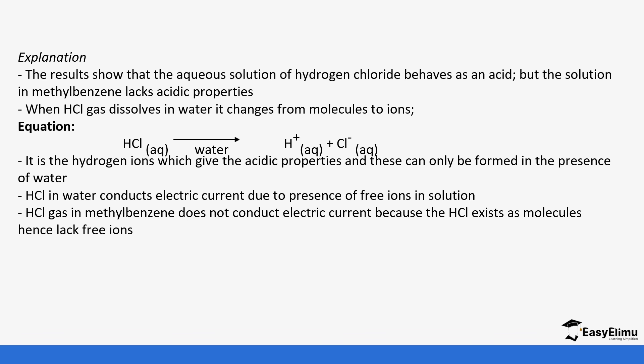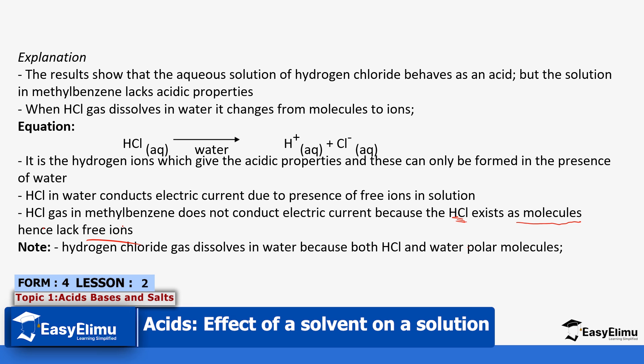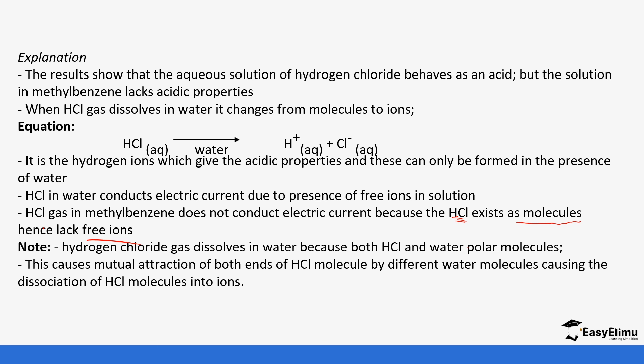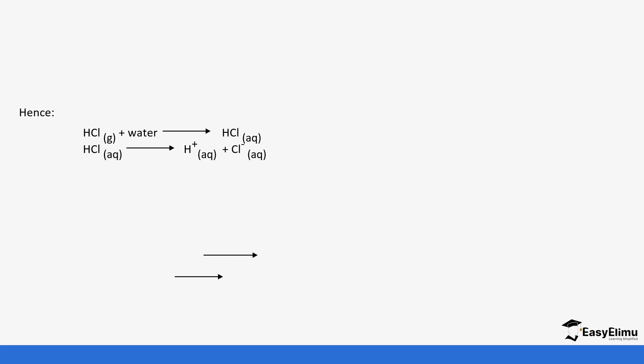Why? Because the hydrochloric does not dissociate into free ions. Hydrogen chloride dissolves in water because both hydrochloric and water are polar molecules. They both have polar charges that are able to attract each other. This causes mutual attraction on both ends of hydrochloric molecule by different water molecules, causing it to dissociate.